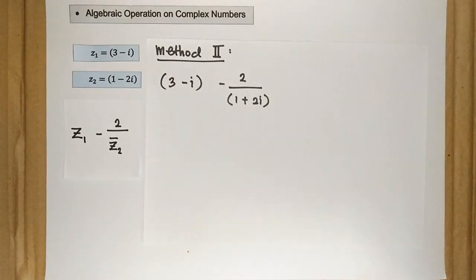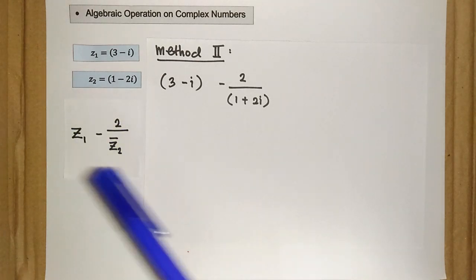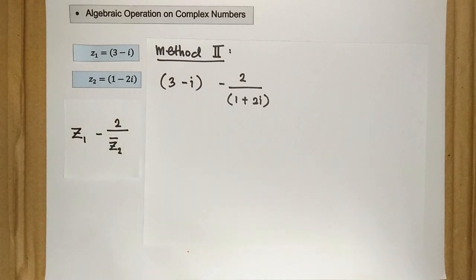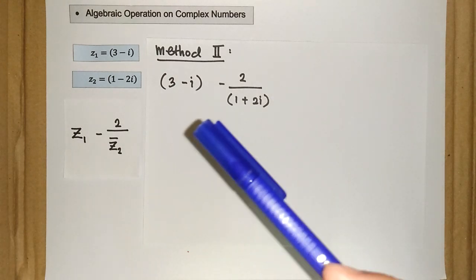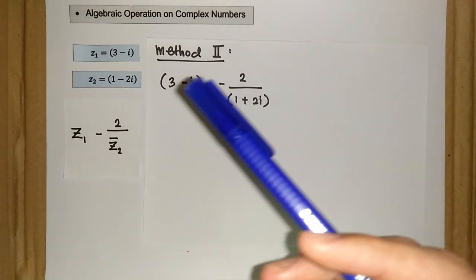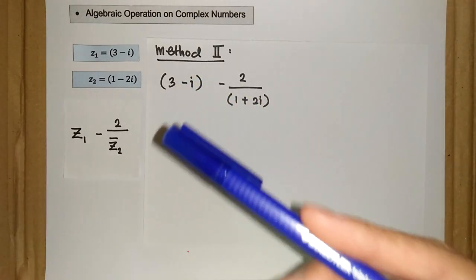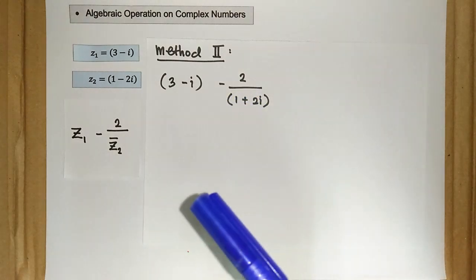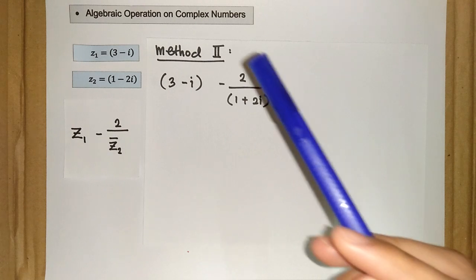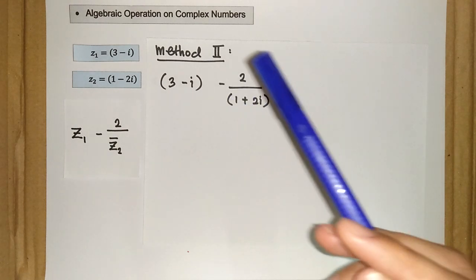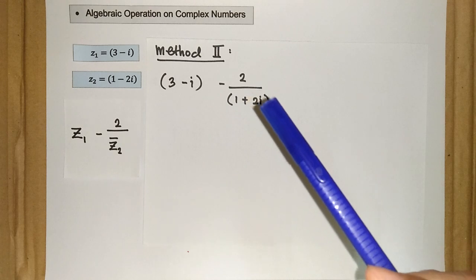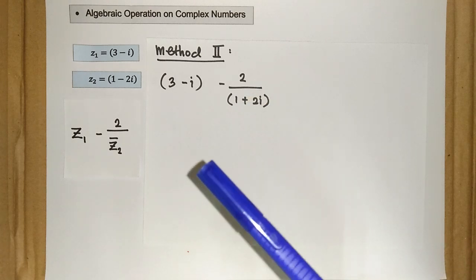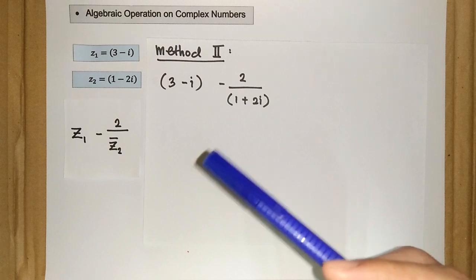In the previous method, Method 1, we tried to find this expression by merging the fractions into one single fraction by making the denominator equal, and then we rationalize the denominator. So for Method 2, what we want to do is rationalize these fractions first, before we merge the fractions into one single fraction. Basically, it's the vice versa of Method 1.